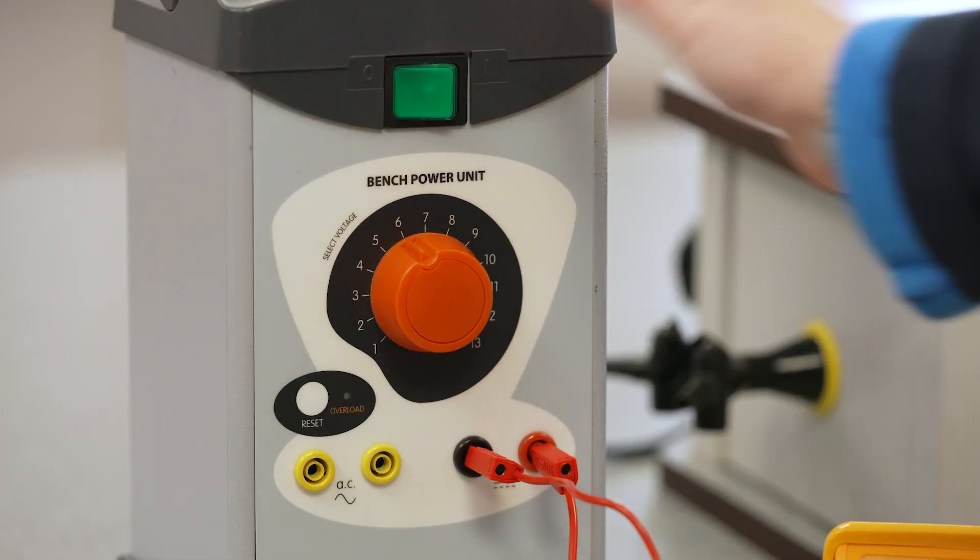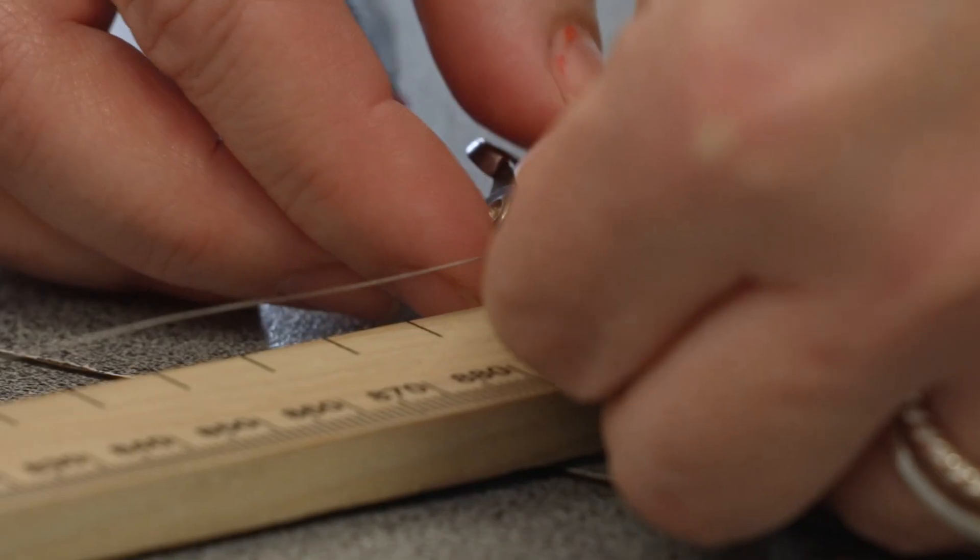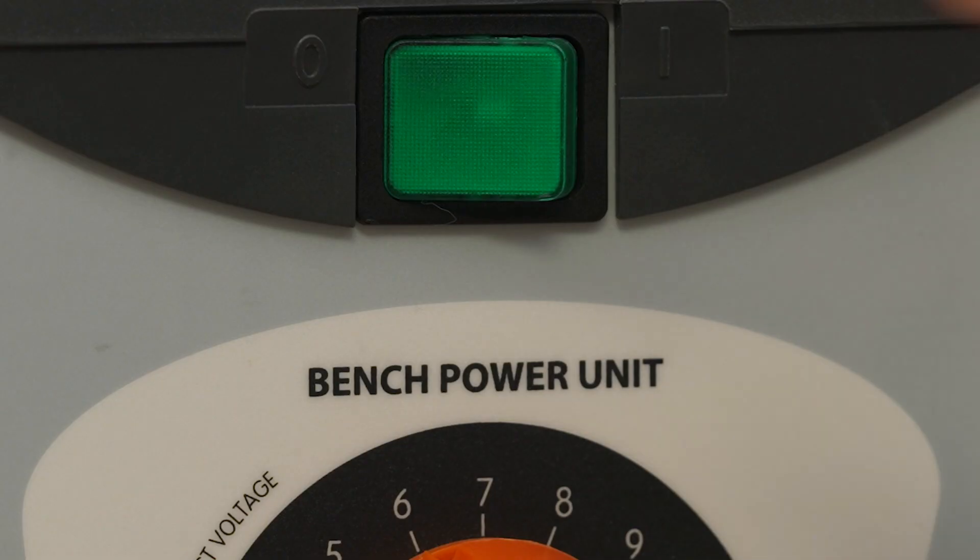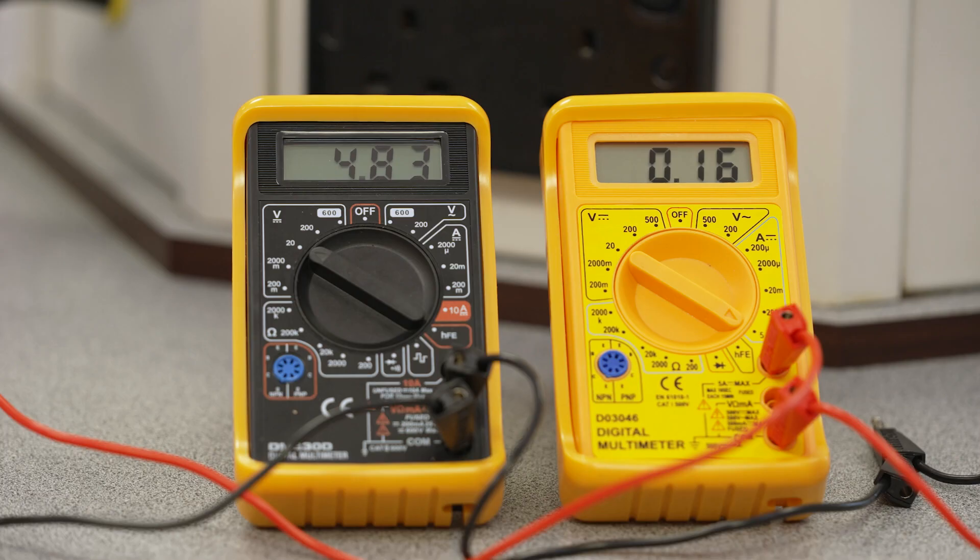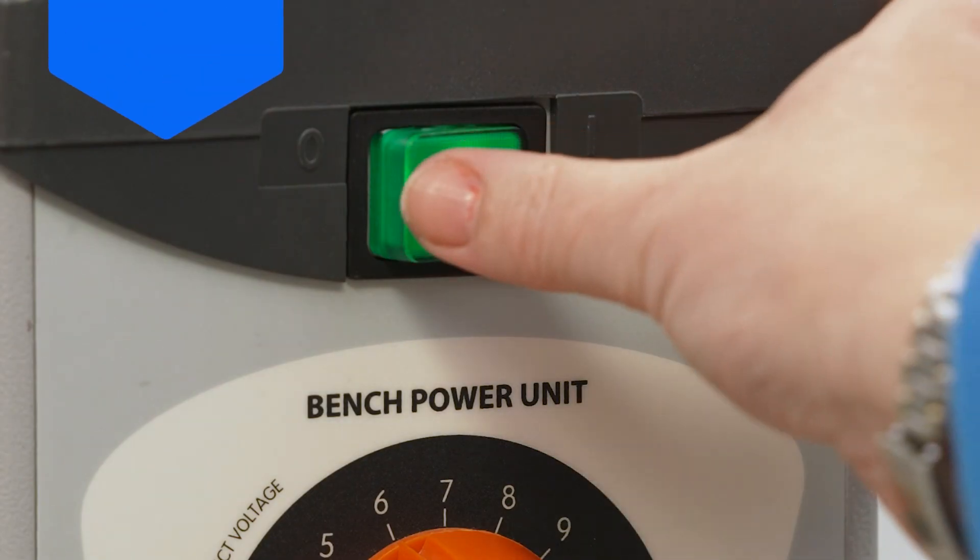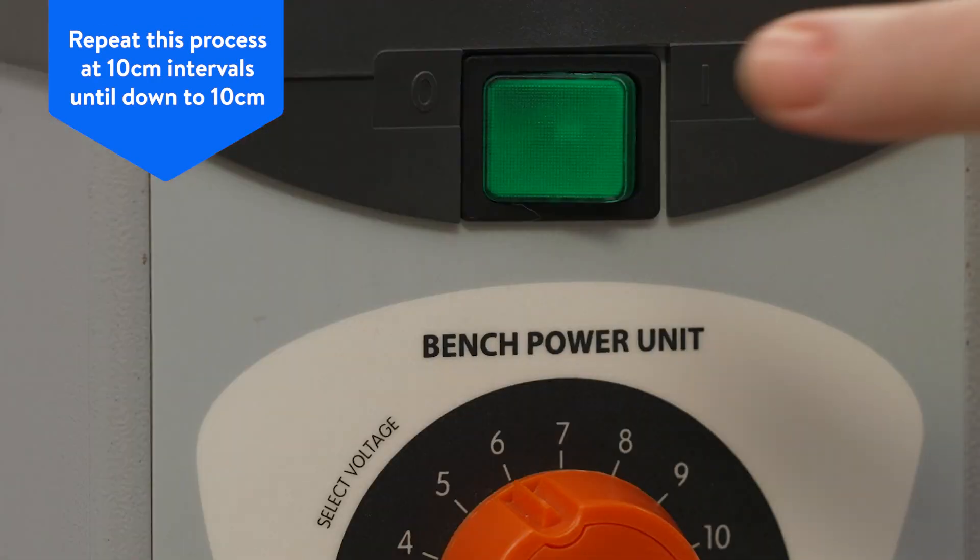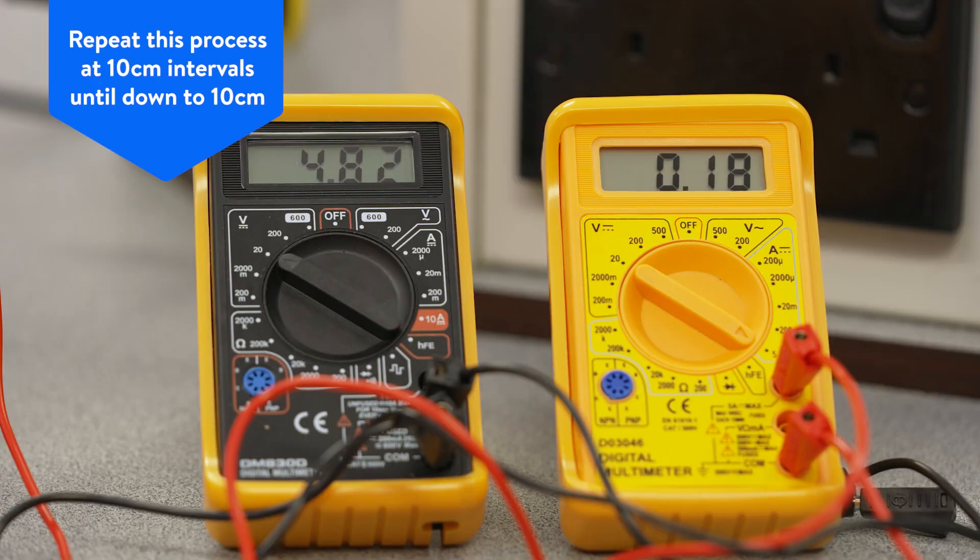With the power supply turned off, move the traveling crocodile clip to the 90cm mark. Switch the power supply back on and record the readings from the ammeter and voltmeter. Repeat this process at 10cm intervals until you're down to the minimum length of 10cm.